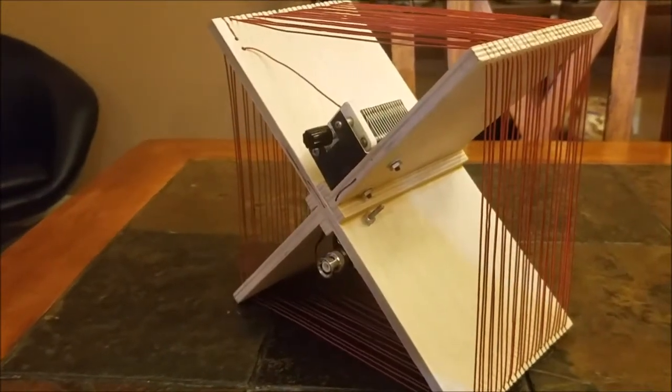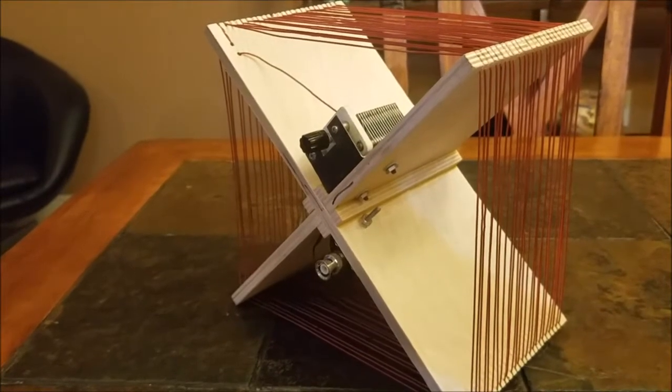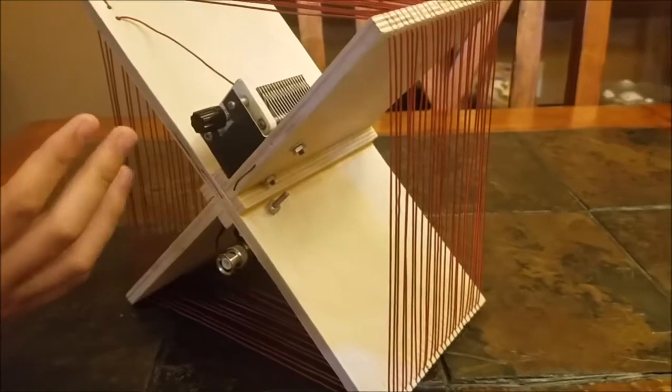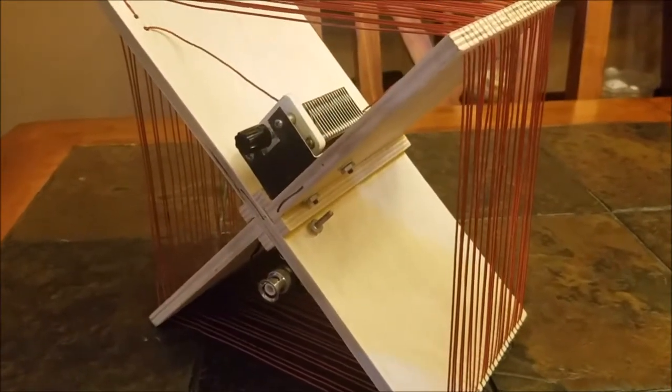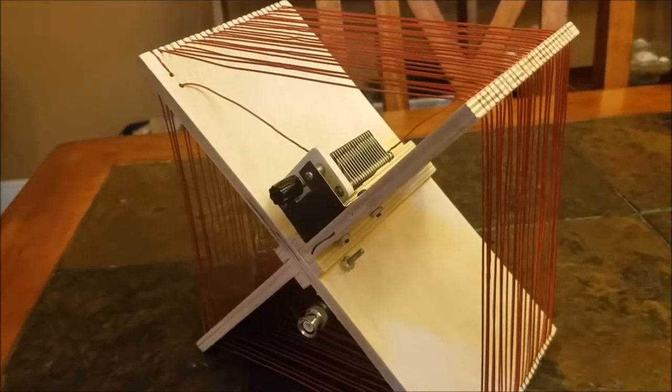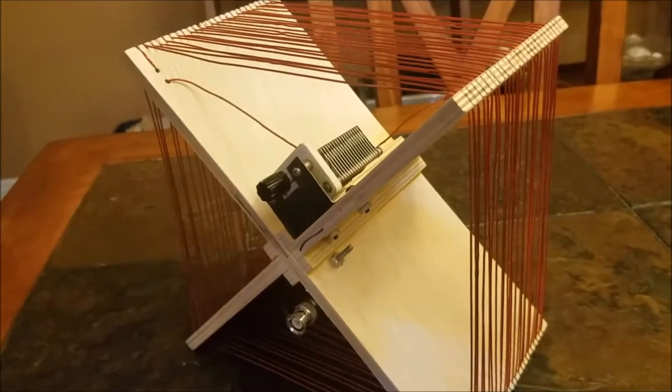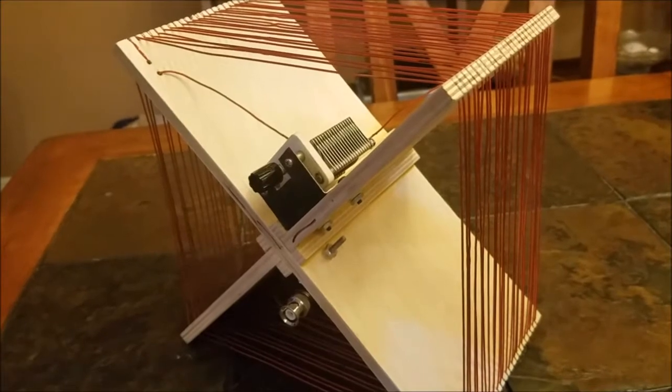The main part of that was the variable capacitor we picked up at the Orlando ham fest. Here we have another loop antenna with the main element being the variable capacitor, and it's actually a loop antenna for the AM broadcast bands. Since the AM broadcast bands are typically low frequency, we had to wrap the wire around a few times so that it has the length needed to be able to receive these signals.